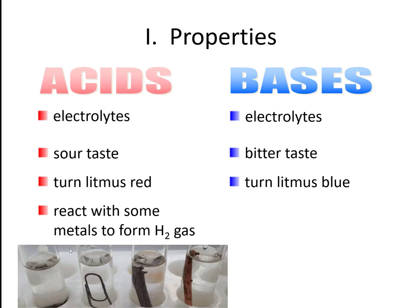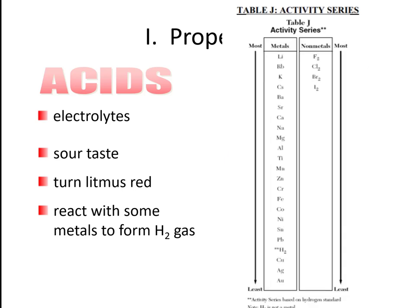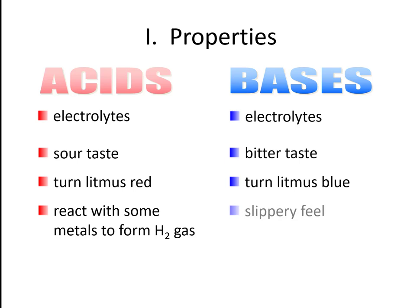Acids will usually react with metals to produce hydrogen gas. This is something that all acids have in common. If you look at Table J and find hydrogen on Table J — that's our activity series — you have a pretty good idea already of which metals will react with acids and which ones will not.